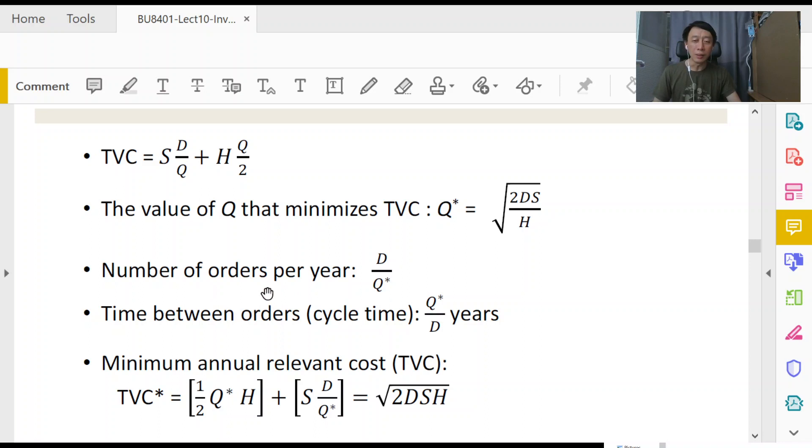If you have one triangle in a year, the base of the triangle, that is time between orders, will be one year. If you have two triangles dividing the year, then you have half a year as the time between orders. So if you have d over q number of triangles in a year, you will have one over d over q years apart between the orders.